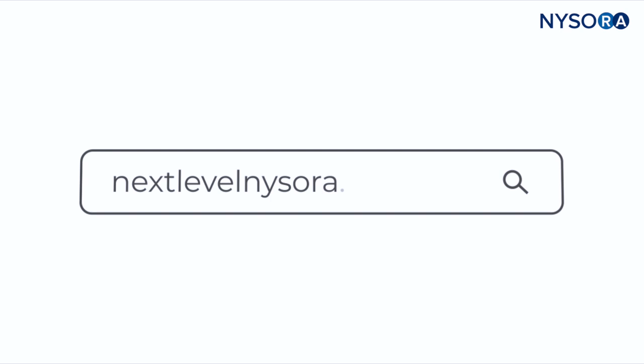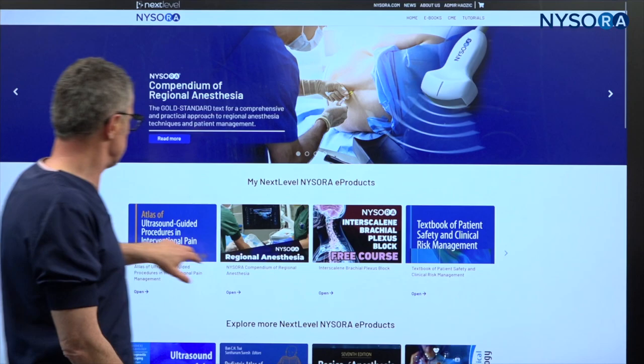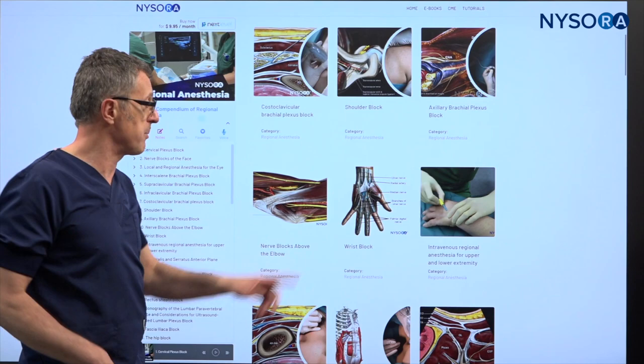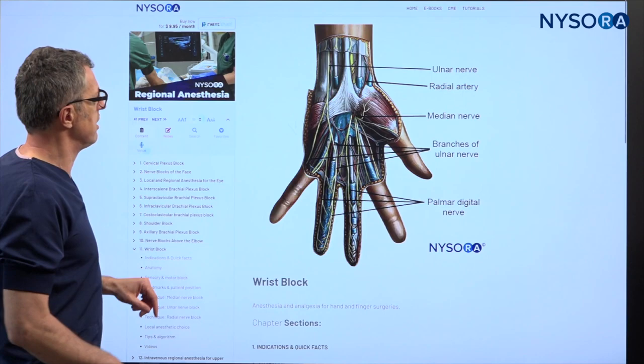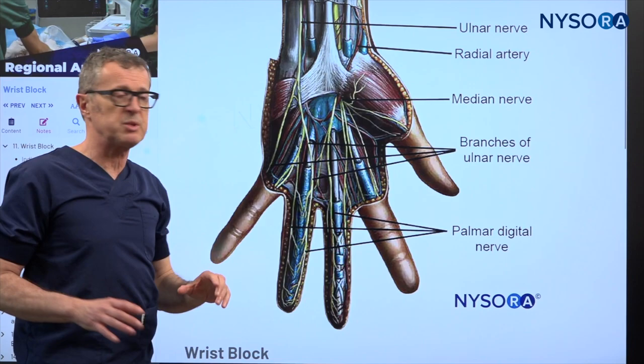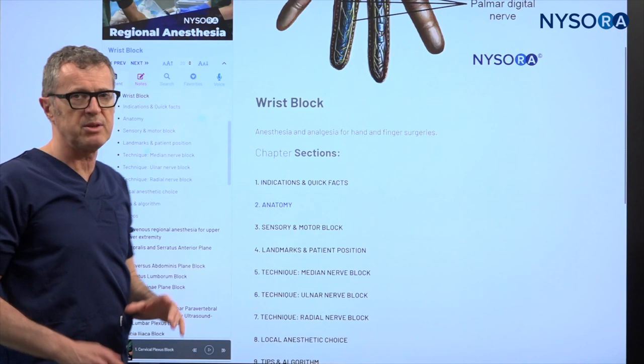For this explanation we're going to go to the newest NYSORA e-learning resource, which is Next Level NYSORA. Let's go to NYSORA's Compendium of Regional Anesthesia, which is one resource on it. In here we have a whole range of different techniques, but today we're going to talk about the wrist block. Opening the wrist block in the NYSORA Compendium, here we can see the ulnar nerve, the median nerve, and the superficial radial nerve.